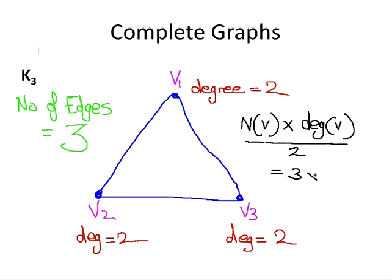Here we have 3 times 2, all over 2, and that gives us 3. Now you may ask, why are we dividing by 2? It's essentially because we count each vertex twice otherwise. Each edge, we will count each edge twice otherwise.